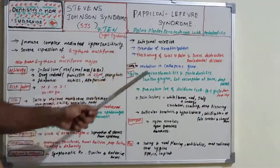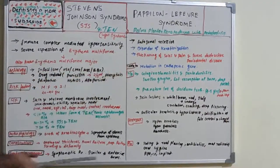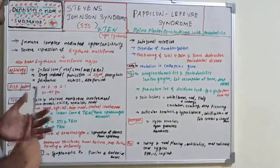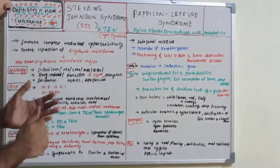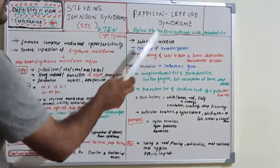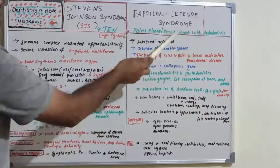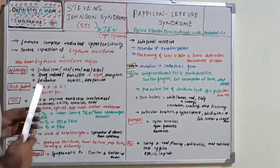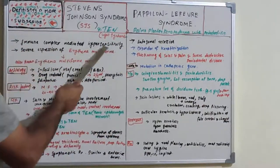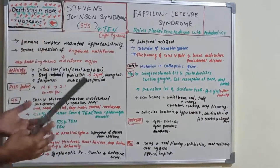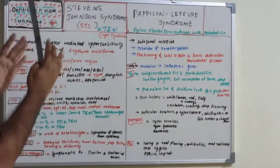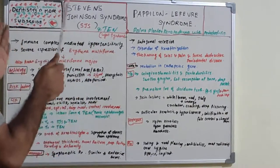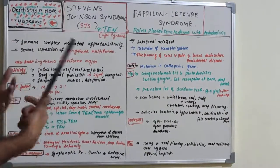As the name suggests, Papillon-Lefèvre syndrome involves keratinization on the palms and plantar region, as well as severe alveolar bone destruction — so it is a disease characterized by periodontitis and keratinization of palms and soles. It is an autosomal recessive disorder. When studying syndromes, always study two or three together so you don't confuse clinical features.